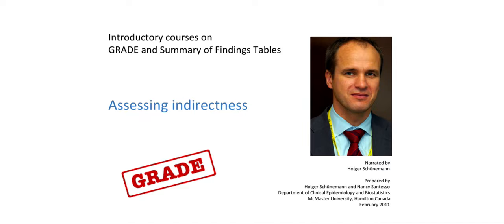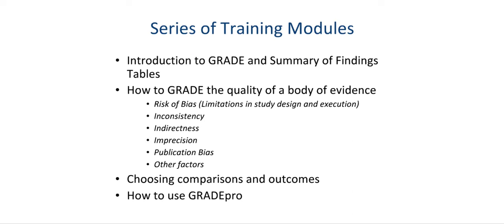Welcome to the introductory course on GRADE and Summary of Findings Tables. This module is part of a series of modules and deals with assessing indirectness. The series includes an introduction to GRADE and Summary of Findings Tables, how to grade the quality of a body of evidence, including risk of bias, inconsistency, indirectness, imprecision, publication bias, and other factors, choosing comparisons and outcomes, and how to use the GRADE profiler software, GradePro.